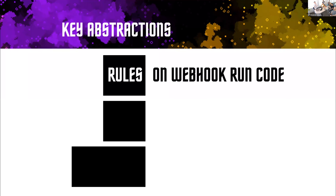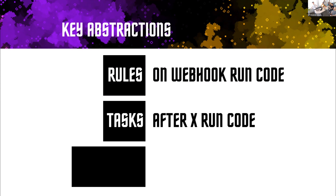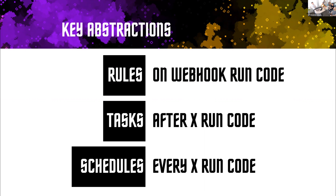The key abstractions are: rules — a webhook comes in from GitHub, it evaluates rules. Then there's tasks. Think of it as like an RFC process — you create a new repo that has a new issue that says RFC, and then five minutes later, three days later, one week later, we send a Slack message. That's a task scheduled for five minutes, three days, and seven days in the future. And then there's schedules — like our Monday morning checkup that looks at how many open PRs there are, who is assigned to be on incidents. Those are scheduled parallel jobs that happen once a week at a set time.